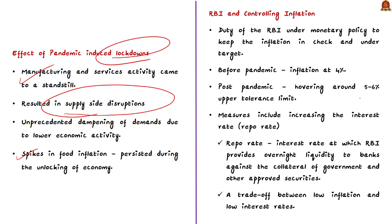It is the duty of the RBI to keep inflation in check. The most important tool is the repo rate. Through increase or decrease of repo rate, the RBI keeps inflation in check, maintains price stability, and also plays an important role in the country's economic growth. Repo rate is the interest rate at which RBI provides overnight liquidity to banks against the collateral of government securities. Through the increase or decrease of repo rate, the RBI controls the money supply in our economy.